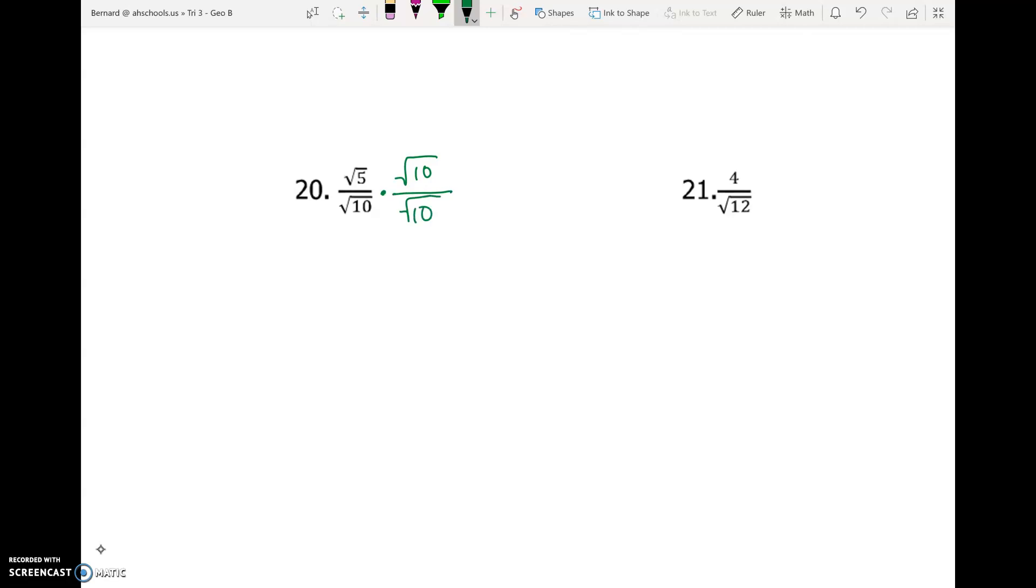Because remember, by multiplying by square root of 10 over square root of 10, it's just like multiplying by 1. And so the value of everything is not going to change, but we're going to get it into a form that we like better. So here we go. Remember, anytime we're multiplying fractions, we're multiplying across. So top times top and bottom times bottom.